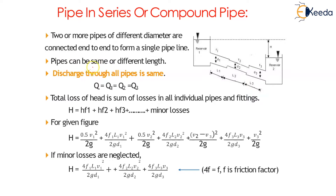These pipes can be of the same or different length. As seen in the image, there are three different pipes having three different lengths: L1, L2, and L3. Discharge through all the pipes is the same: Q1 = Q2 = Q3 = Q. Total loss of head is the sum of losses in all individual pipes and fittings, so total head loss H = HF1 + HF2 + HF3.